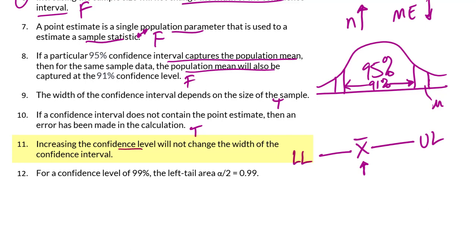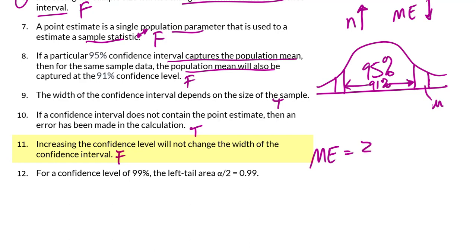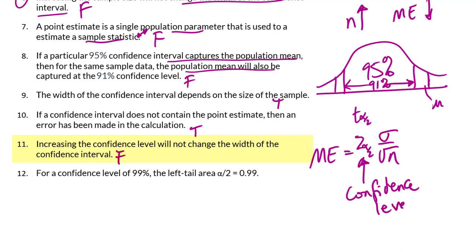Number 11: Increasing the confidence level will not change the width of the confidence interval. That is a false statement. Looking at the formula for the margin of error, we have the Z value, which is Z·α/2, or it could be T·α/2. This value is determined by the confidence level, and the higher the confidence level, the larger the value of Z or T. So if we increase the confidence level, we increase the value of Z or T, and then we increase the width of the confidence interval.